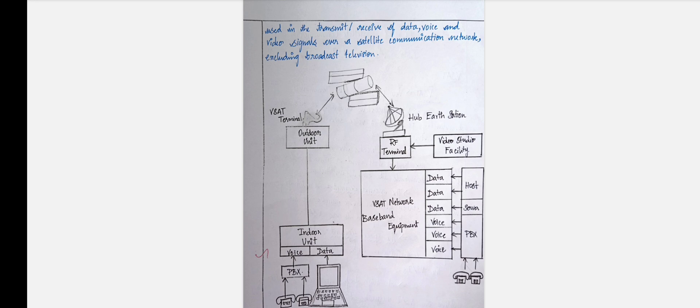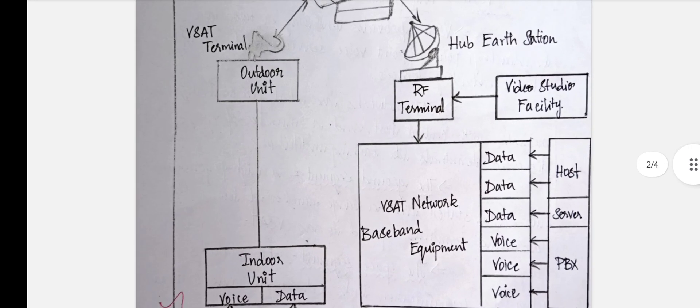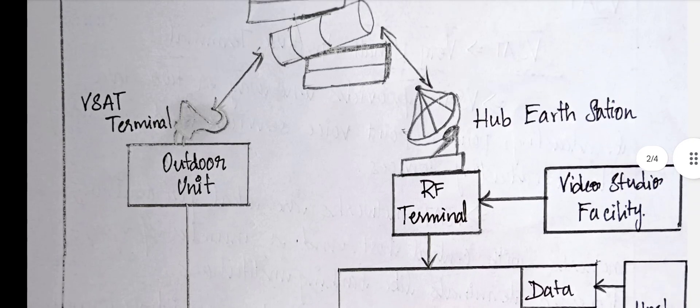The outdoor unit VSAT has outdoor unit and indoor unit. In this we can see that voice and data can be transmitted. VSAT is very helpful. In this it has different segments.